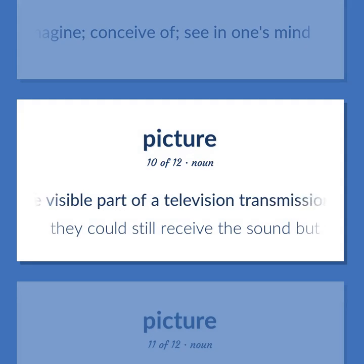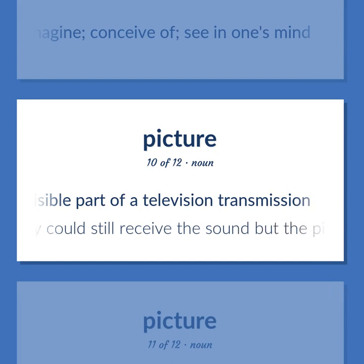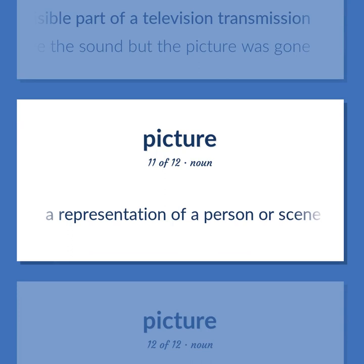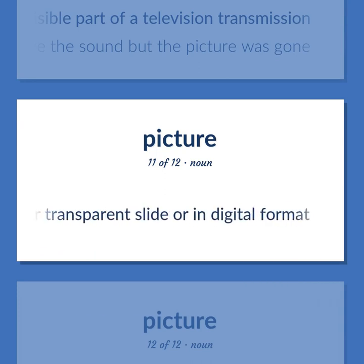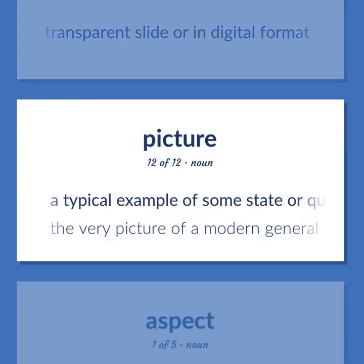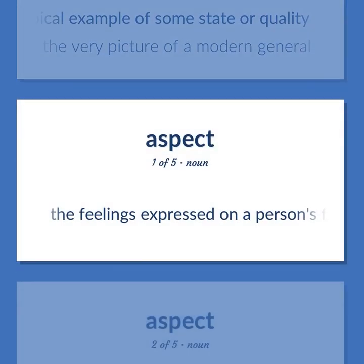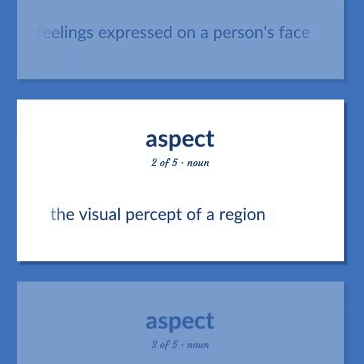Picture: The visible part of a television transmission. They could still receive the sound but the picture was gone. A representation of a person or scene in the form of a print or transparent slide or in digital format. A typical example of some state or quality. The very picture of a modern general. The feelings expressed on a person's face. The visual percept of a region.